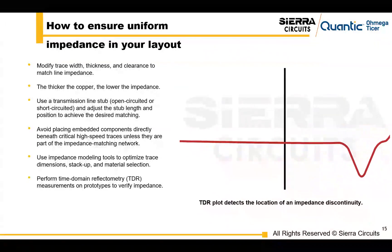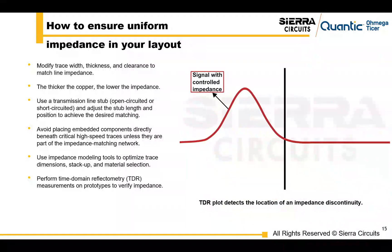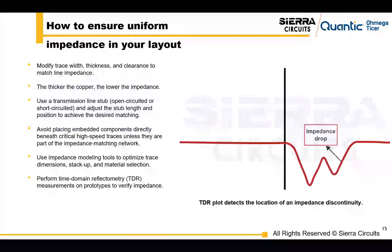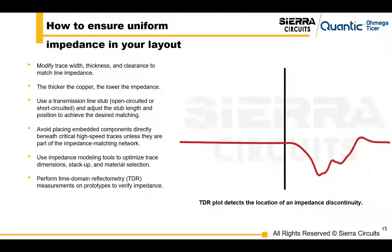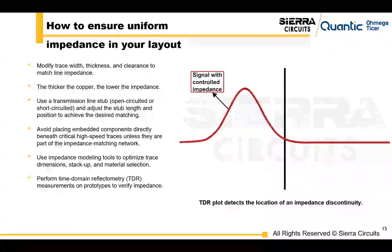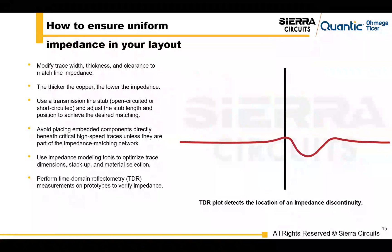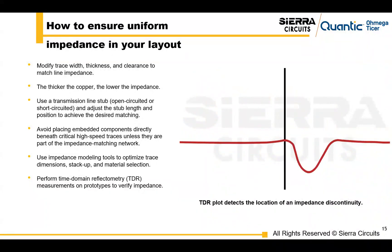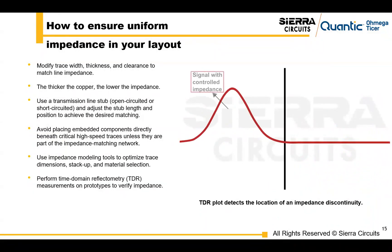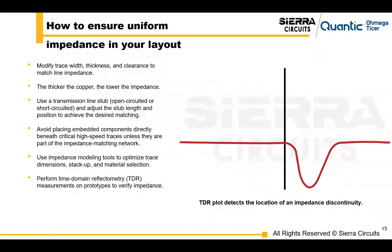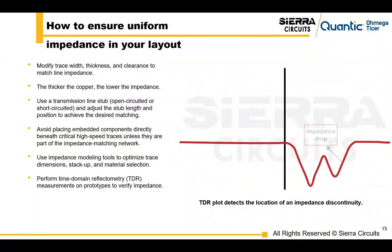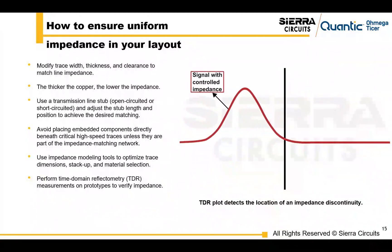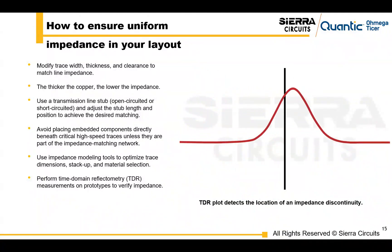For achieving good signal performance and uniform impedance across the line: modify the trace width and clearances to match the desired impedances. Do not place embedded components directly beneath critical high-speed traces unless they're part of the impedance matching network. Perform TDR measurements on prototypes to verify the impedance, which will help resolve any inconsistencies seen across the PCB.